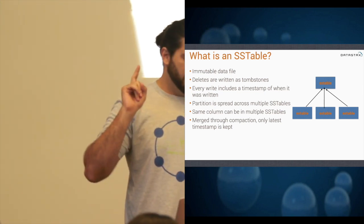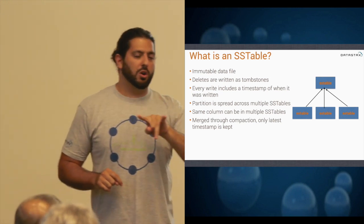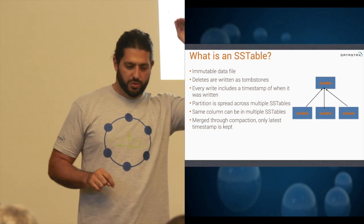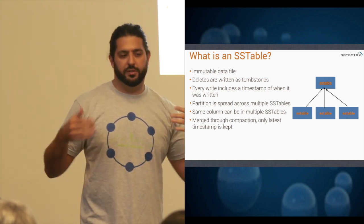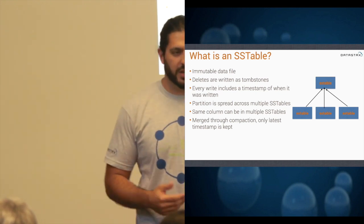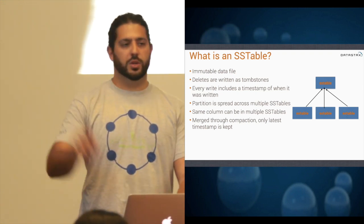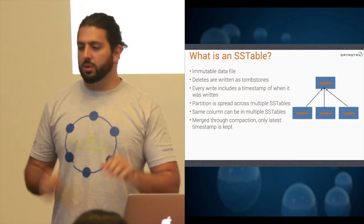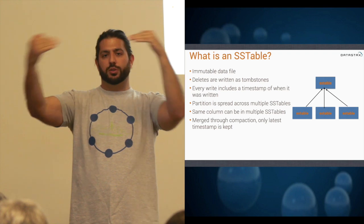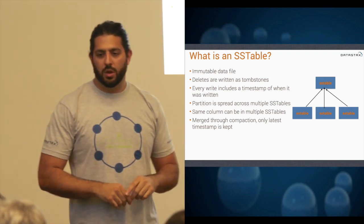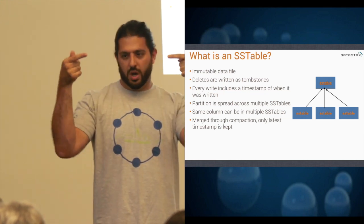There are two compaction strategies. The default is called size-tiered compaction, which is good when your system is only doing inserts and never updates. There's another called leveled compaction, which is really good for systems with frequent updates. An update does not issue a delete — it will literally just write another version of the row. You can have the same row in two different SS tables, and during compaction it takes the newest one based on timestamp and throws away the older one.